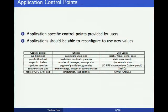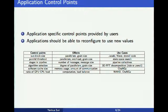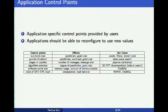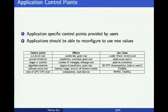There are two types of control points: application control points and runtime control points. Application control points are provided by developers specific to each application. Besides registering them, the application should also be written to adapt and reconfigure using new values once the control system selects them. After examining some common applications, we've listed a set of control points in a table — for example, sub-block size used by Jacobi stencil code, which affects parallelism, granularity, and overhead.